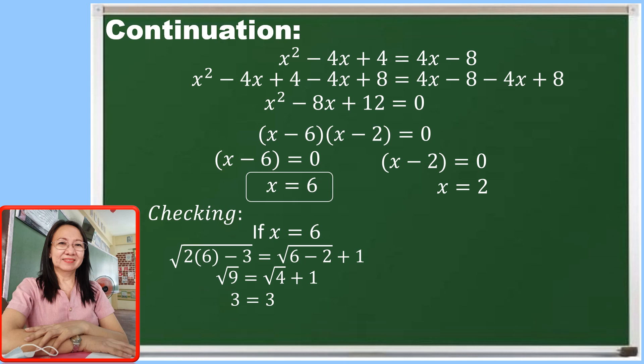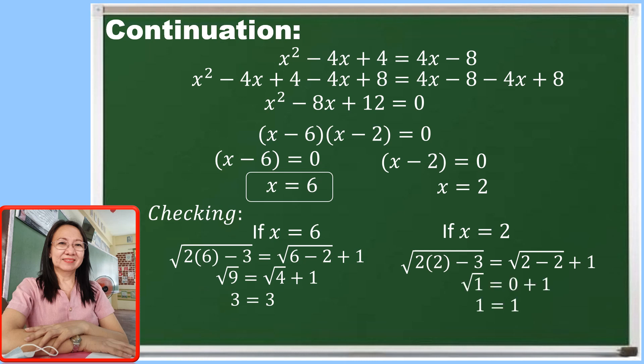How about the other value? If x is equal to 2, let us substitute 2 for x so that we have the square root of 2 times 2 which is 4, and 4 minus 3 is 1, and the square root of 1 is 1. On the right side, we have the square root of 2 minus 2 is 0, and 0 plus 1 is equal to 1. So 1 is equal to 1, which is a true statement. Therefore, 2 is also an accepted value for x. So the value of x is either 6 or 2.